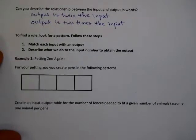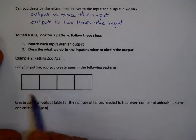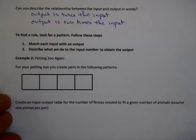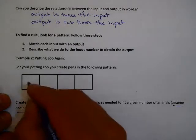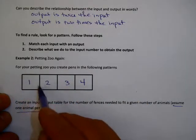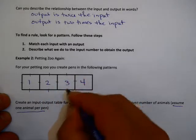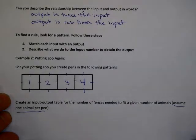Let's take a look at the petting zoo example we looked at yesterday. We created pens in a square pattern. What we're going to do now is create an input-output table for the number of fences needed to fit a given number of animals, assuming one animal per pen. In this picture we would fit four animals and would need thirteen fences in order to do that.